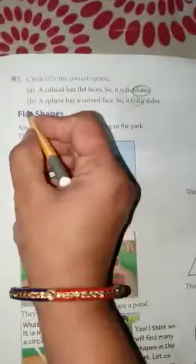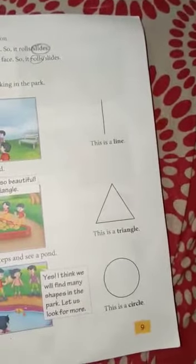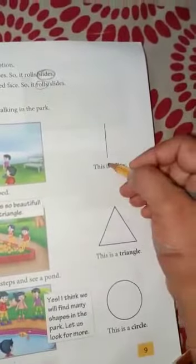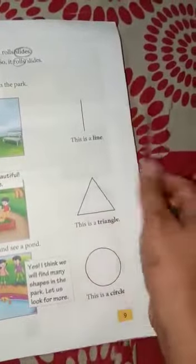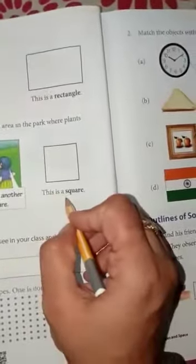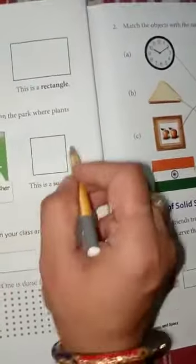Next is flat shapes. Flat shapes ke baare mein hamne kal bhi padha tha. Aaj phir se hum dekhenge. Firstly, this is a line. Next, yeh dekhi, three sides and three corners and this is a triangle. And no sides and no corners, this is a circle. This is a rectangle. Opposite sides are equal and it has four corners. And next is, this is a square. All sides are equal.